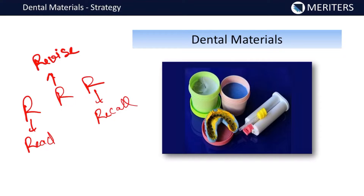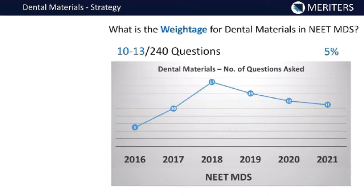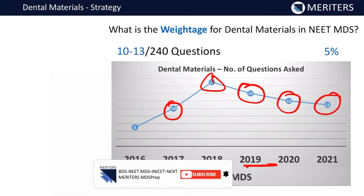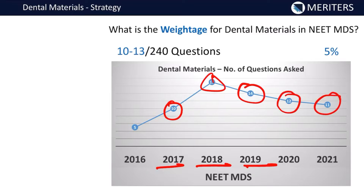Before going into the details, let me tell you the importance of this subject. Looking at the previous five to six years of NEET examination analysis, almost 10, 17, and 14 questions were asked in 2017, 2018, and 2019 respectively. In 2020 there were around 12 questions, and last year there were 11 questions. This accounts for 10 to 13 questions out of 240, forming almost five percent — though I personally believe almost seven percent is coming from dental materials. NBE also recommends that almost 14 questions will come from this subject.